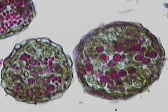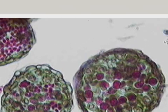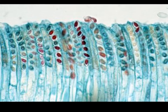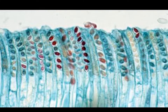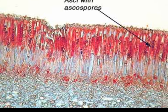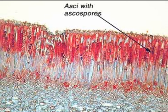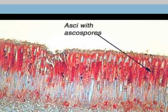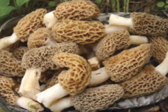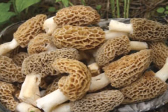The family is Morchellaceae, and it has an ascoma with a sponge-like pileus and a white, hollow-type stipe. Genus Morchella is a true morel, and it is edible. Mushrooms are classified as fungi, not as plants — we already know that.